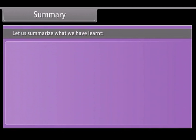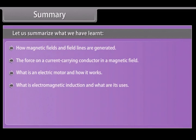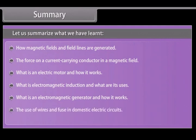Summary. Let us summarize what we have learned: How magnetic fields and field lines are generated, the force on a current carrying conductor in a magnetic field, what is an electric motor and how it works, what is electromagnetic induction and what are its uses, what is an electromagnetic generator and how it works, the use of wires and fuse in domestic electric circuits and how they work.